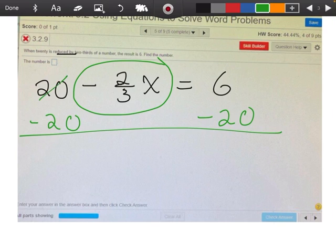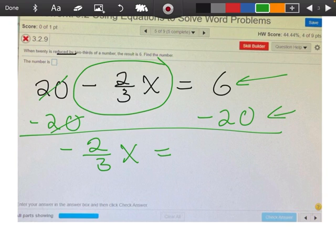So those are going to cancel, and I'm going to be left with negative two-thirds x equals—remember, this is positive 6 and negative 20. So if I have $6 and I owe you 20, I'm going to owe you 14.